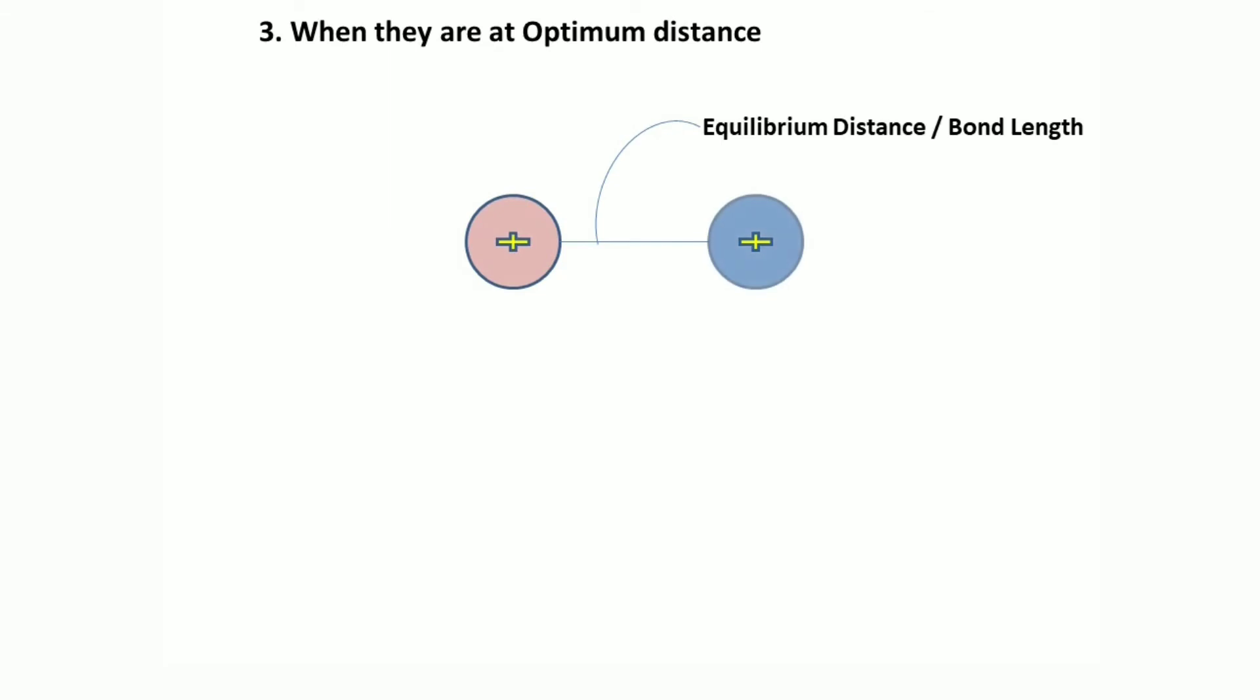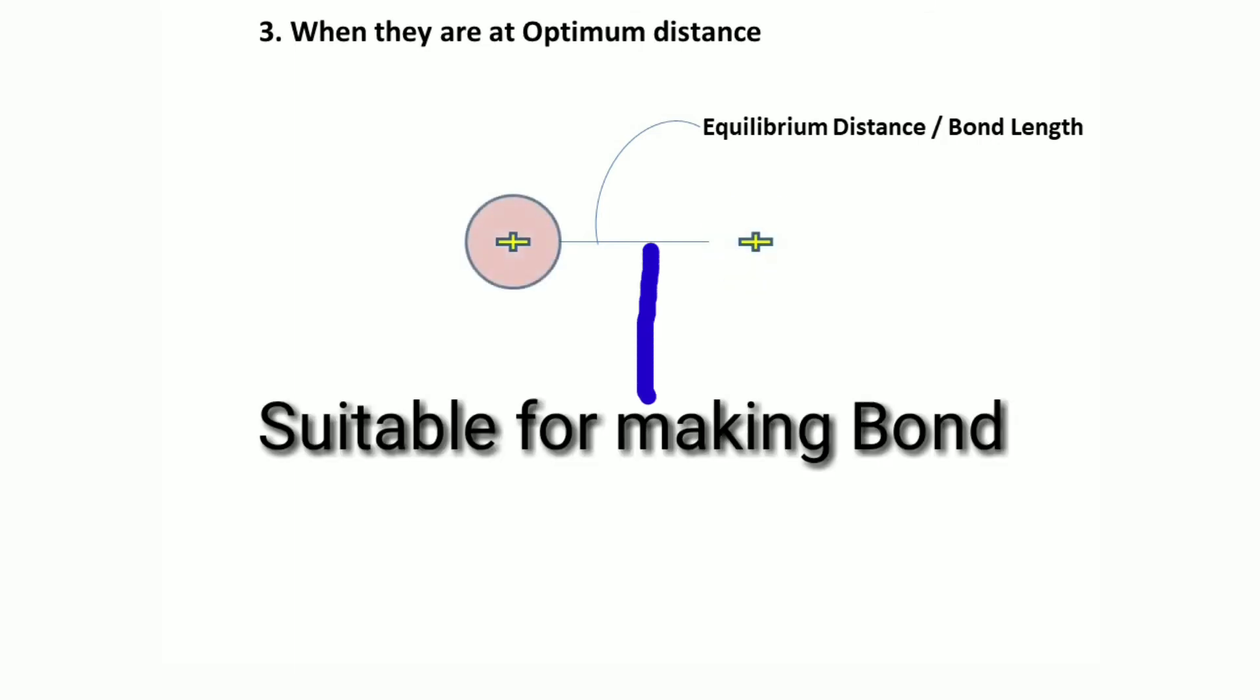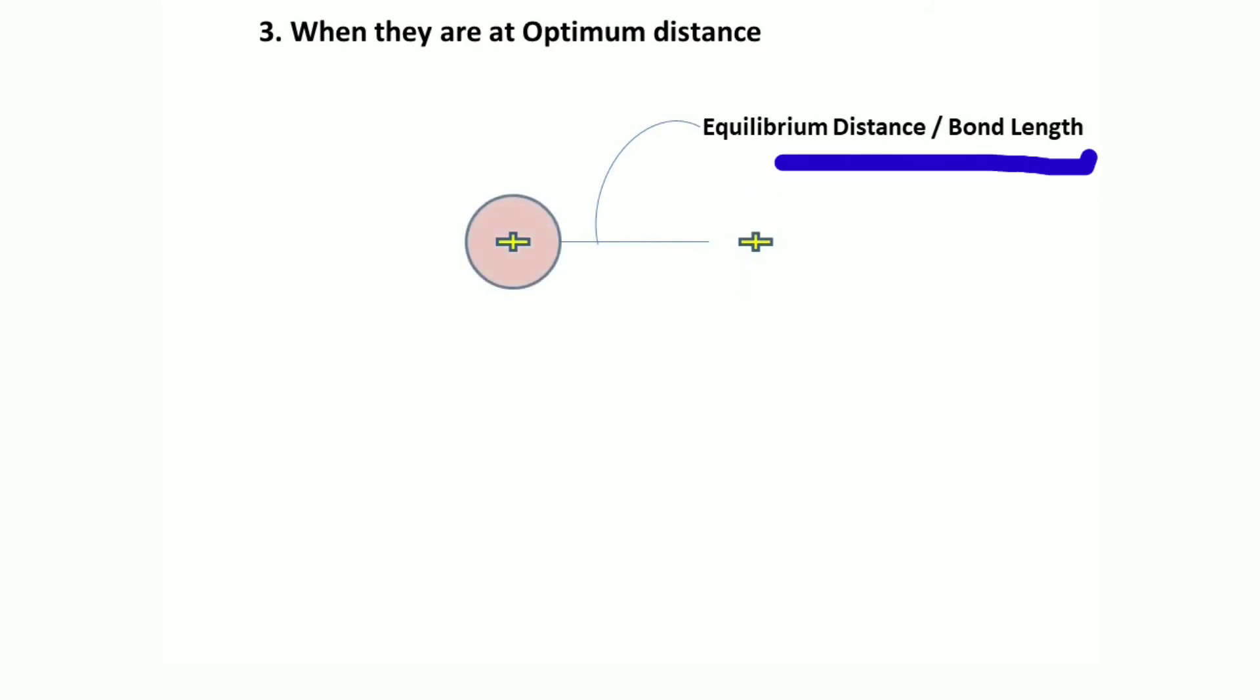Then they come to a certain point where their attraction force will be maximum. If they come closer, their repulsion force will get stronger. This optimum point is suitable for making a bond and is known as equilibrium distance or bond length.